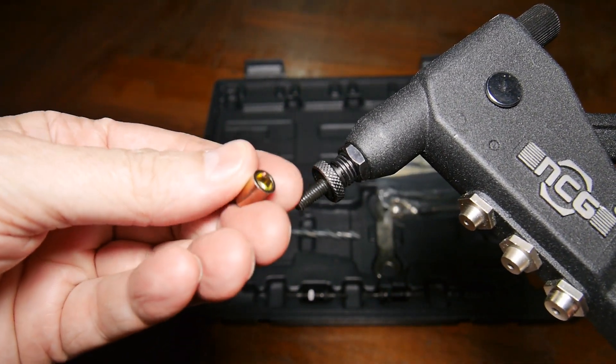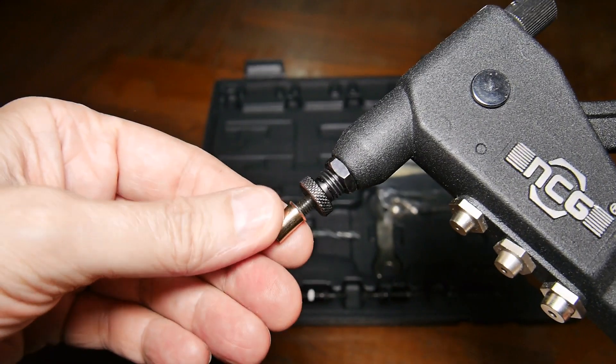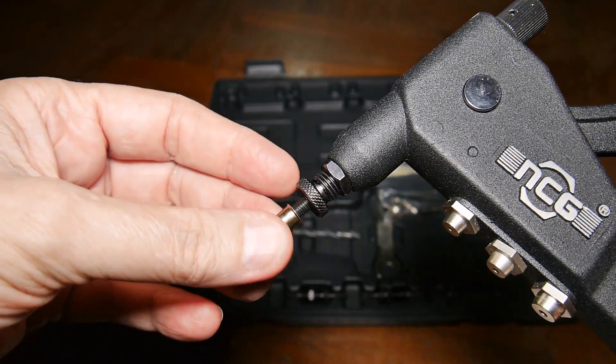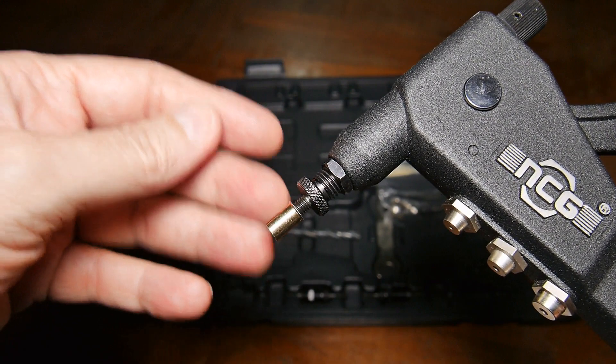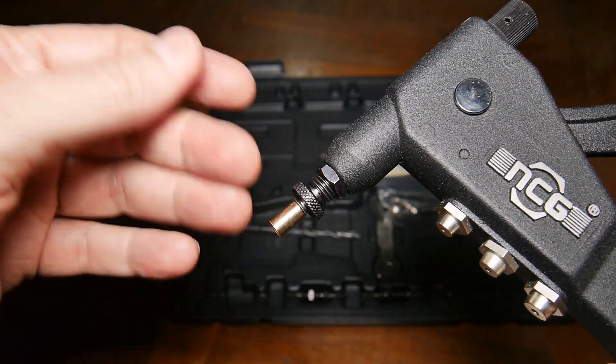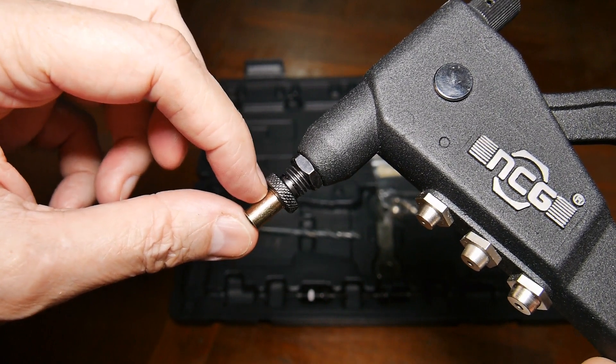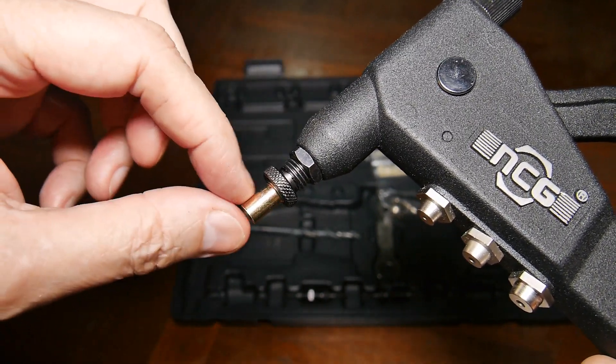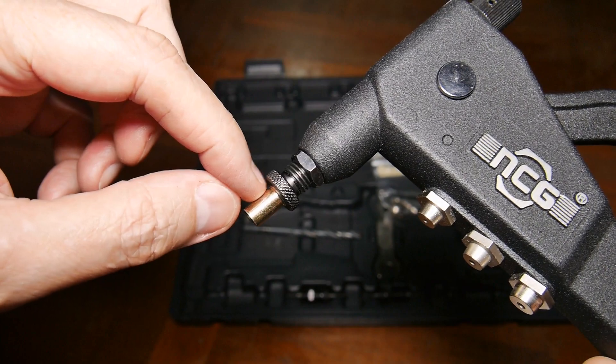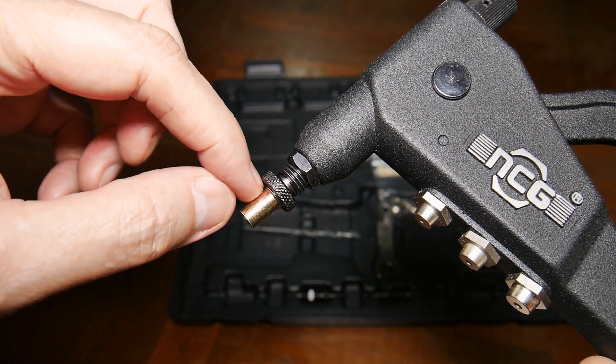And this is one of the inserts. And what you do is you thread the insert on here. And when you squeeze, it's going to crush the insert. I'll show you how it works. There's a little thin spot at the top of the insert. And when you squeeze this, it will pull the bottom up towards the top and create a collar right there.